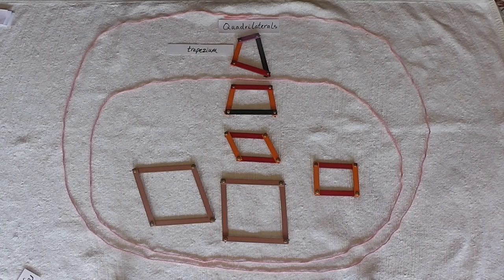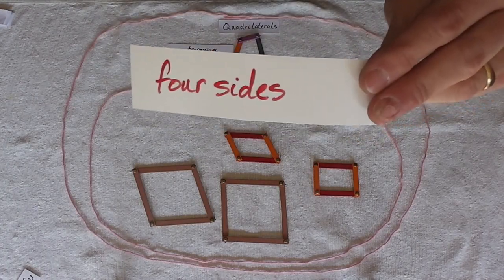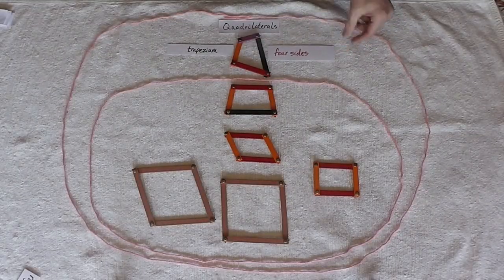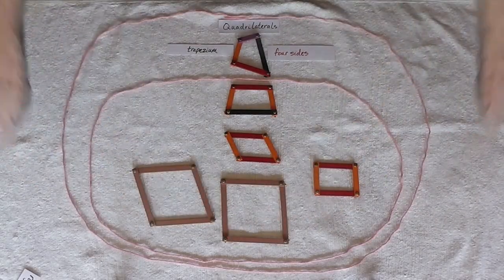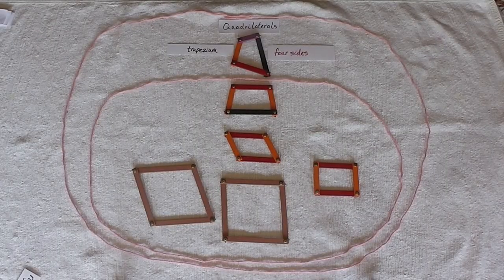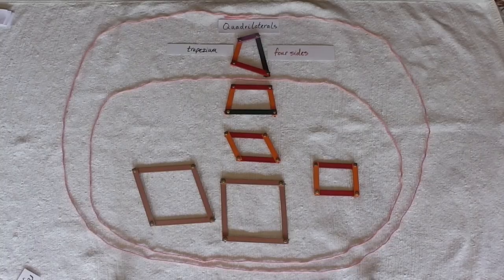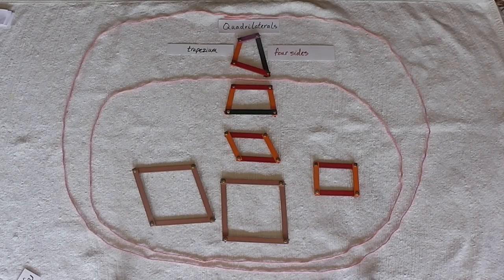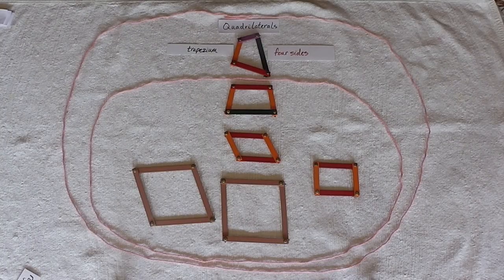Our trapezium has four sides. So everything inside of this big circle is definitely a quadrilateral. Everything inside of this circle could also be a trapezium because it has four sides. However, there's something else going on in here.